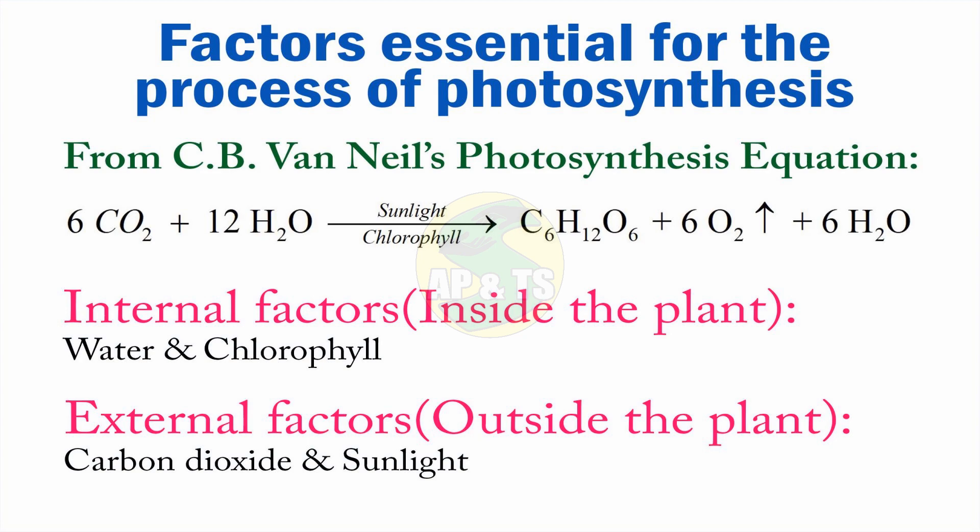Internal factors means they are already present in the plant body. Those are water and chlorophyll. Water is present in the plant body — from the roots, water is absorbed and it reaches the leaves. Chlorophyll is the pigment which gives green color to the leaves. Plants' leaves are green in color, so they have chlorophyll in them. So water and chlorophyll both are present inside the plant.